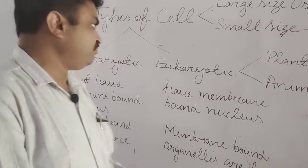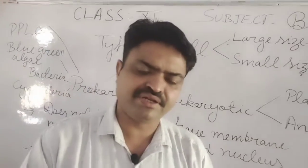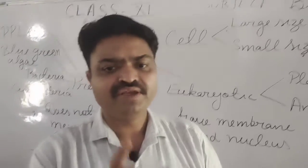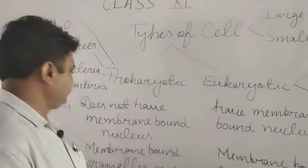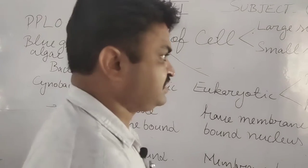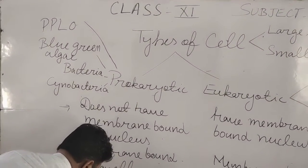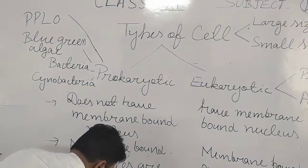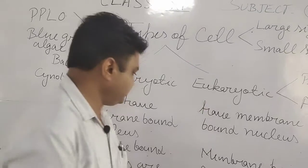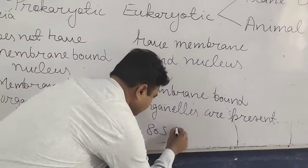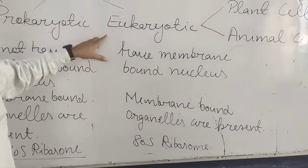Both prokaryotic and eukaryotic cells have ribosomes, but they have different types of ribosomes. In the prokaryotic cell, the ribosome found is the 70S ribosome. 80S ribosome is found in the eukaryotic cell.